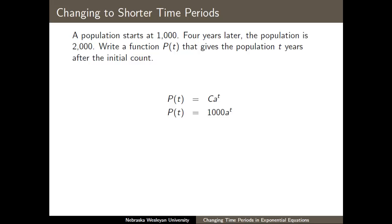Since t measures years, this corresponds to setting t equals 4, giving a population of 2,000. Now I have an equation with just a single unknown, and I can solve this. I can divide both sides by 1,000. I can take the one-fourth root on both sides, which isolates a, and gives me approximately 1.1892.